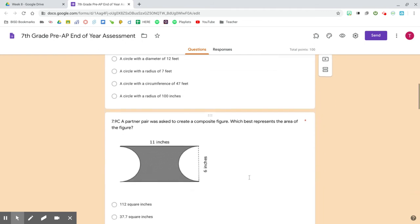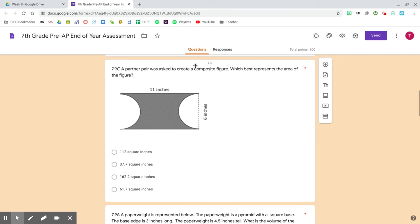Question 2. A partner pair was asked to create a composite figure. Which best represents the area of the figure? 112 square inches, 37.7 square inches, 162.2 square inches, 61.7 square inches.